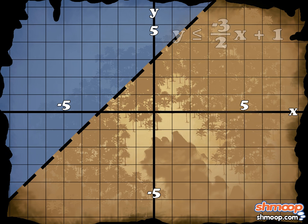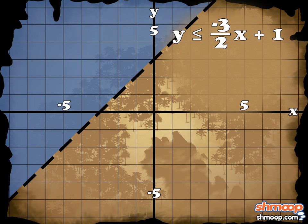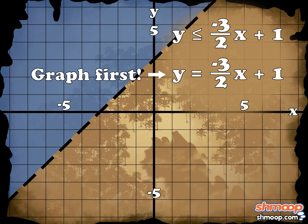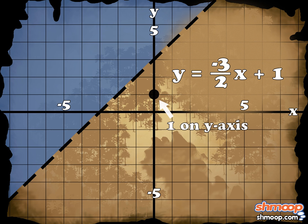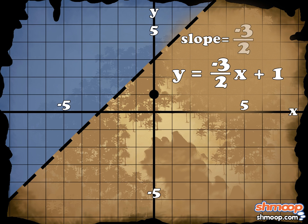For the second line, we have y is less than or equal to negative 3 halves x plus 1. We can graph y equals negative 3 halves x plus 1 first. The equation is in slope-intercept form, so we can plot 1 on the y-axis as the y-intercept. The slope of the line is negative 3 over 2. Since slope is rise over run, we can go down three units on the y-axis and run over two units to the right.